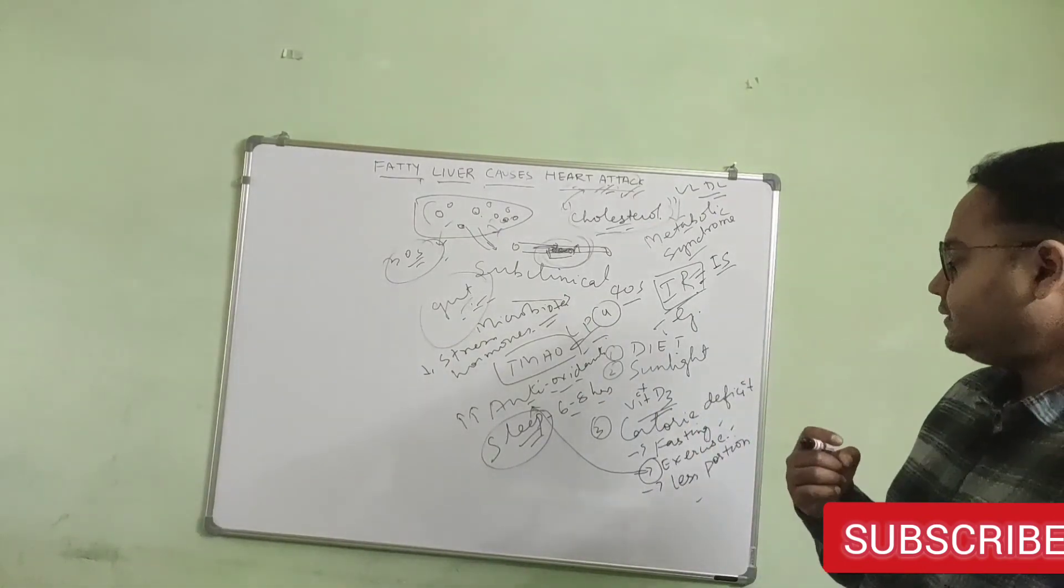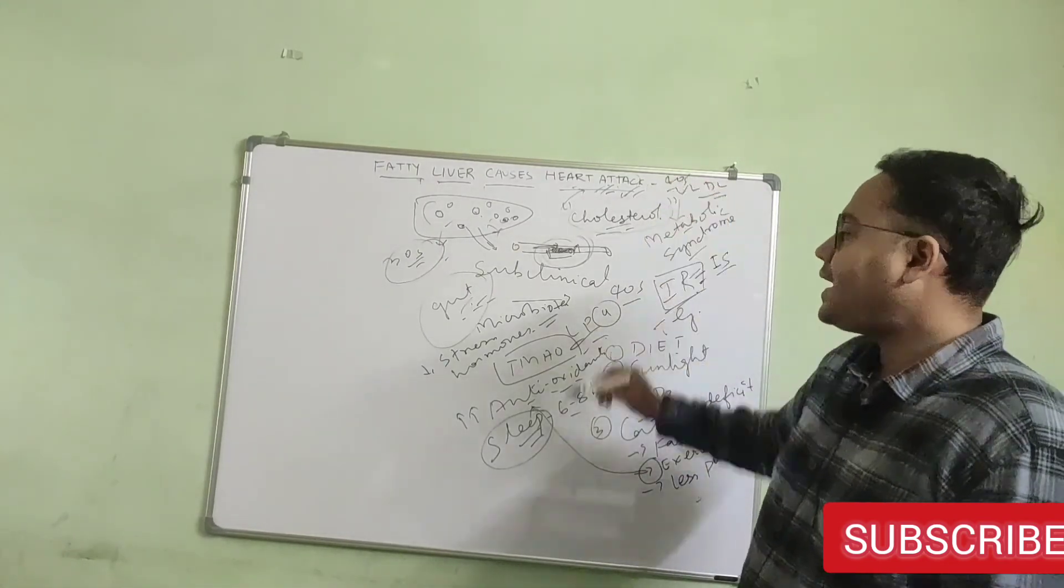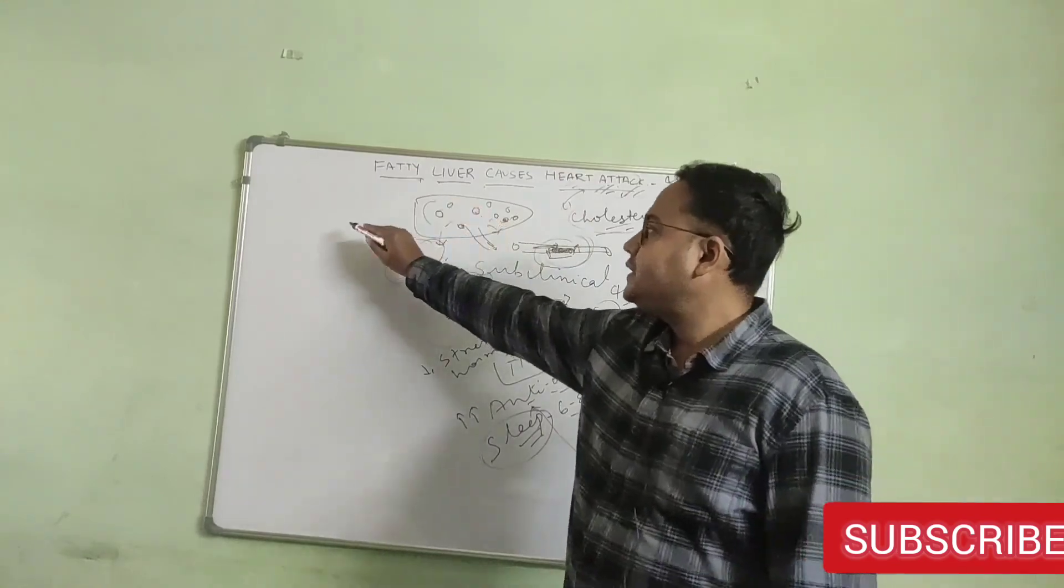These are things that you can do to prevent heart attack in your 40s by ruling out fatty liver in your 30s.